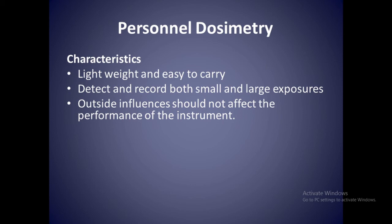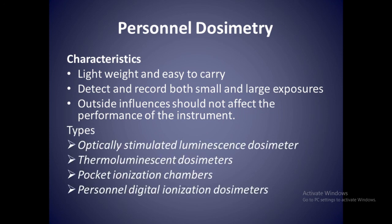As many employees in a healthcare facility may be assigned to wear radiation monitors, the monitors are required to be reasonably inexpensive to purchase and maintain. This permits healthcare facilities to use a large number of monitors in a cost-effective manner. Four types of personal dosimeters are currently widely used: optically stimulated luminescent dosimeters, thermoluminescent dosimeters, pocket ionization chambers, and personal digital ionization dosimeters.